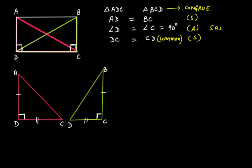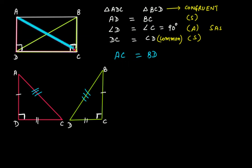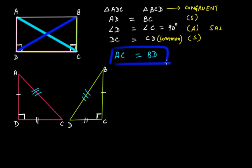Since these two triangles are congruent and we have AD equal to BC and DC equal to CD, the third sides must also be equal. Therefore AC of triangle ADC is equal to BD of triangle BCD — that is, the two diagonals AC and BD are equal to each other. Hence proved.